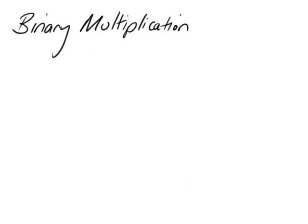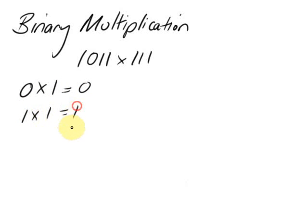Right, the binary multiplication question next. The question involves the same two numbers as before, 1011 times 111. The basics of binary multiplication are very easy: 0 times 1 is 0, and 1 times 1 is simply 1.